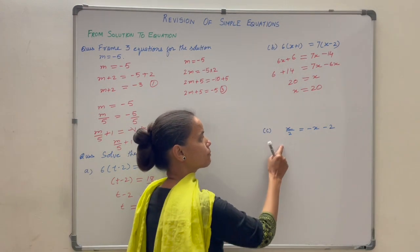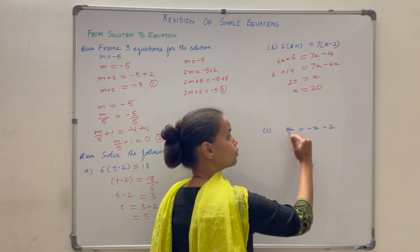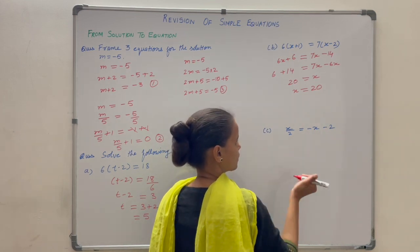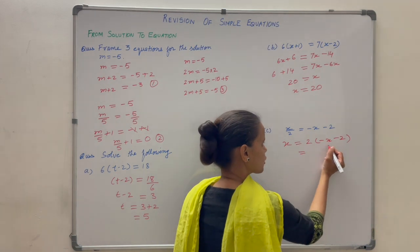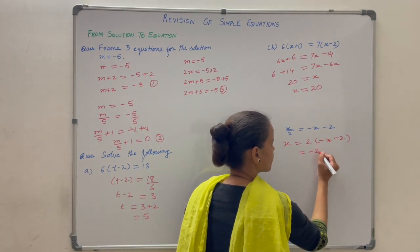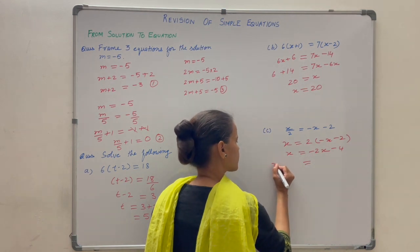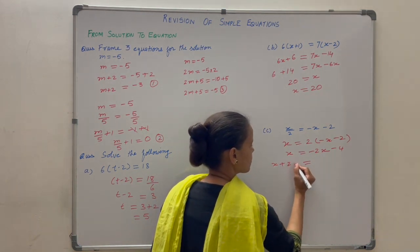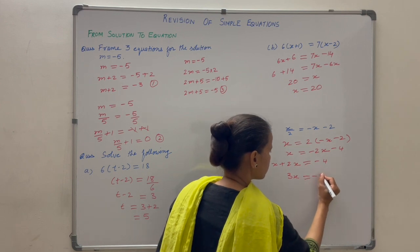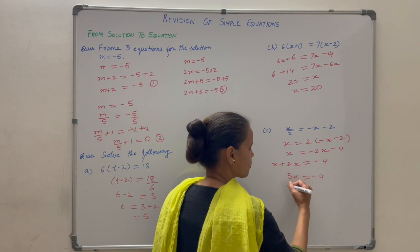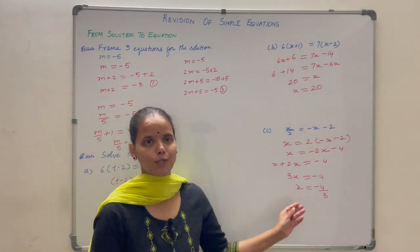Now solve x by 2 equals minus (x minus 2). Take 2 to the other side — it multiplies, giving x equals 2 into (minus x minus 2). Applying the distributive property: 2 into minus x is minus 2x, and 2 into minus 2 is minus 4. Taking minus 2x to the left hand side it becomes plus 2x: 2x plus x equals 3x equals minus 4. The 3 divides minus 4, giving x equals minus 4 by 3.